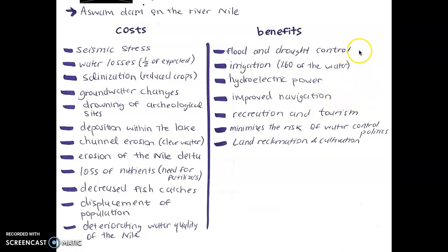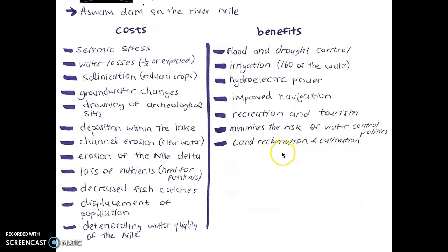Improved navigation also has to do with drought and flooding. Then we have recreation and tourism, which plays a major role in the Egyptian economy — for the Aswan Dam, about $500 million each year. It also minimizes the risk of water control politics, reducing the risk of politicians clashing over the right to water. And also land reclamation and cultivation — so it's like building new land on places where land didn't exist before.